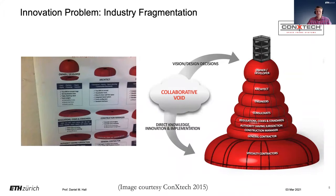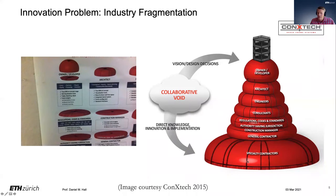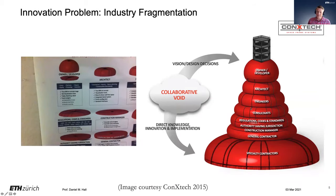During my PhD studies, I visited their factory. They had a chart they called the 'collaborative void.' Back in 2013, as an industrialized construction startup, they said: basically we're down here and these are all the people we have to convince all the way up — the specialty contractor, general contractor, construction manager, codes, regulatory consultants, engineers, architects, and the owner. They called it like the beehive — all the things they had to get across just to implement their product, which offered much better value, just not immediate cost savings.